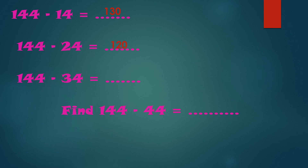144 minus 34: 4 minus 4 is 0, 4 minus 3 is 1, and 1 minus 0 is 1, so the answer is 110. The last one, 144 minus 44: 4 minus 4 is 0, 4 minus 4 is 0, and 1 minus 0 is 1, so the answer is 100.